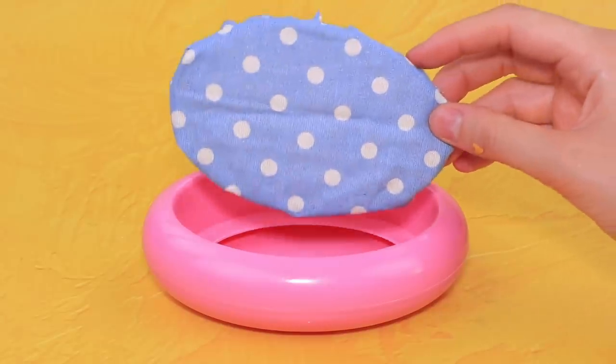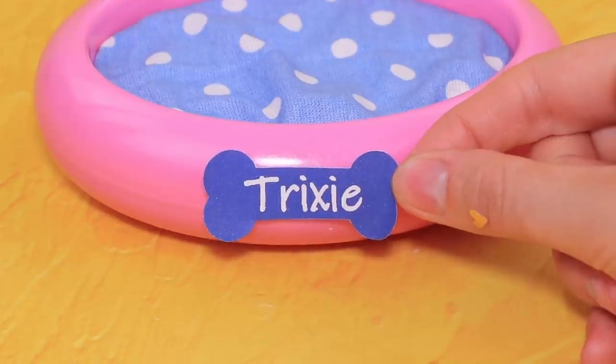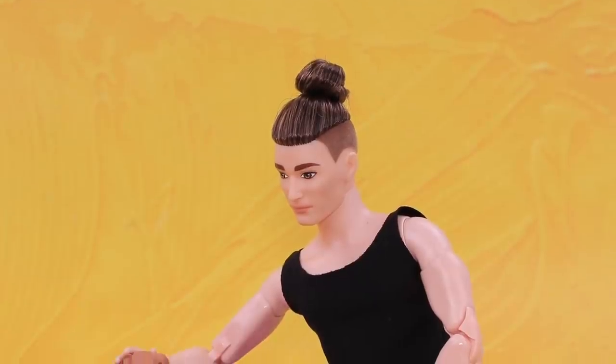Put a pillow inside a fabric case. Glue a printed image of a name to the sides. Now it looks like Trixie has his own castle!